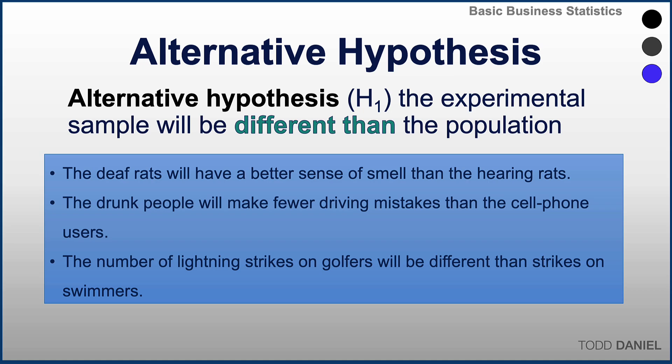Here are ways in which we might write an alternative hypothesis. The deaf rats will have a better sense of smell than the hearing rats — we're indicating a direction of change. The drunk people will make fewer driving mistakes than the cell phone users — again, indicating a direction. The number of lightning strikes on golfers will be different than the number of strikes on swimmers — in this case, indicating a difference without indicating a direction of change.